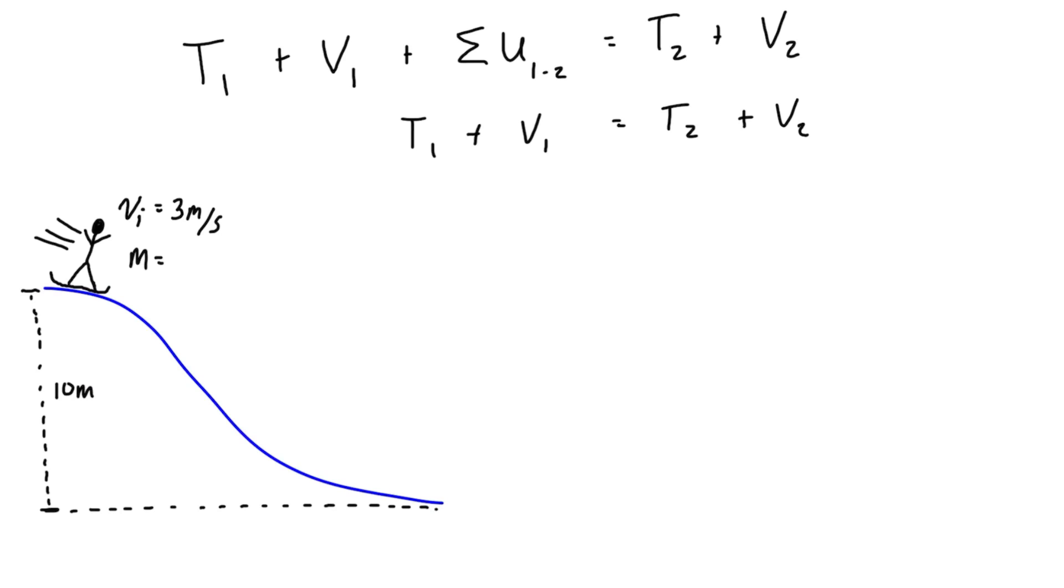He's at a height here, going down a slope that's 10 meters. We can give him a mass, but you'll see that it's going to drop out in a second. Let's say that this person is 75 kilograms and that the surface has no friction.